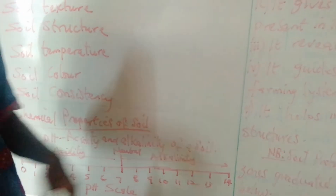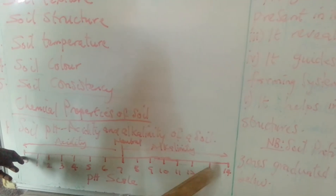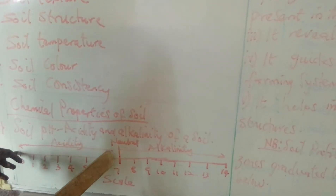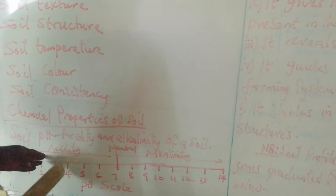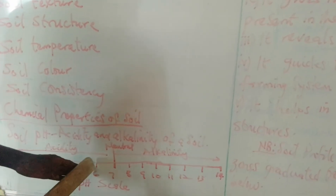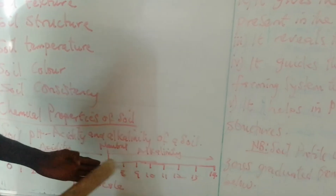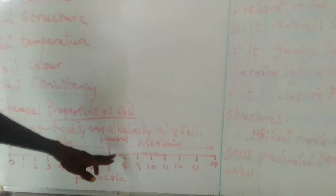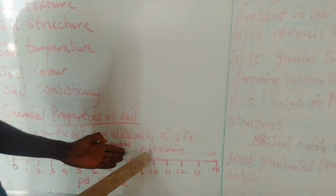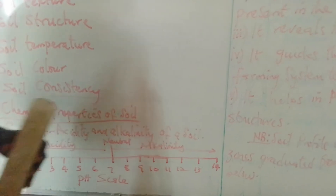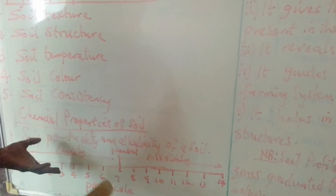Now, chemical properties of soil. Majorly we see soil pH — the acidity or alkalinity of the soil. The pH scale is graduated from 0 to 14. From 0 to 6.9 the soil is acidic; from 0 to 3 it is strongly acidic; from 4 to 6 it is weakly acidic. At 7 is the neutral point. When you graduate from 7 to around 10 or 11 the alkalinity is weak, and further to 14 it is very strong. You can test soil pH — the alkalinity or acidity of the soil.